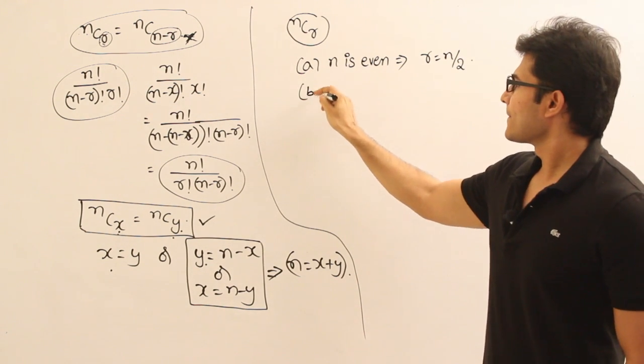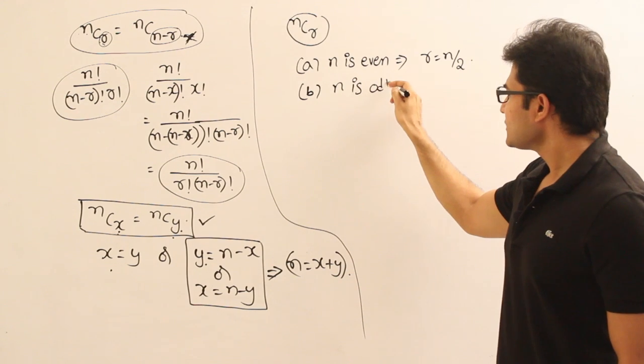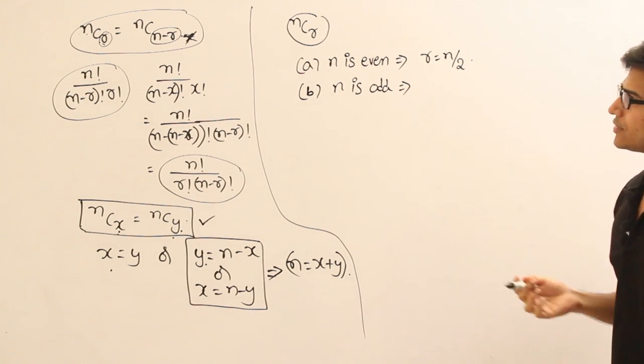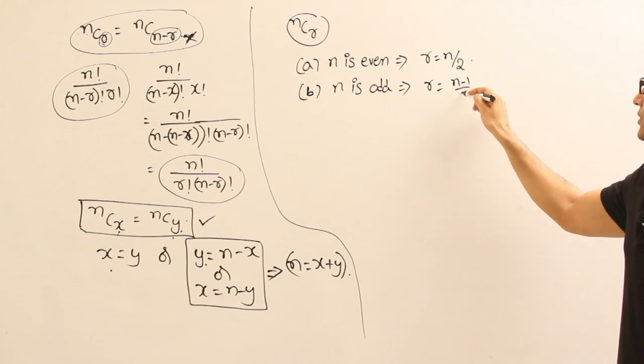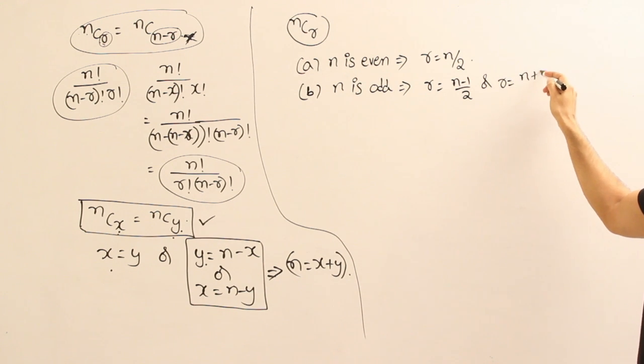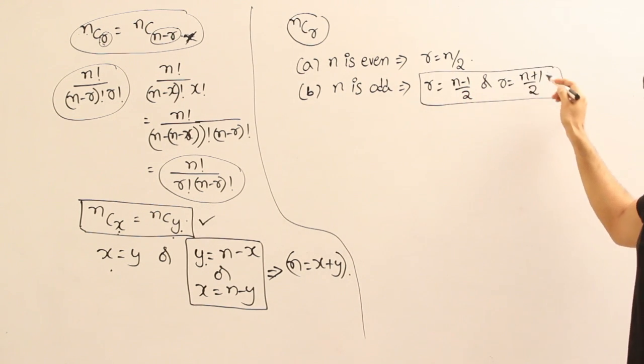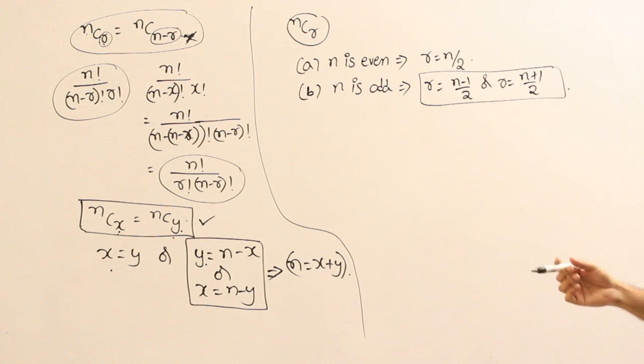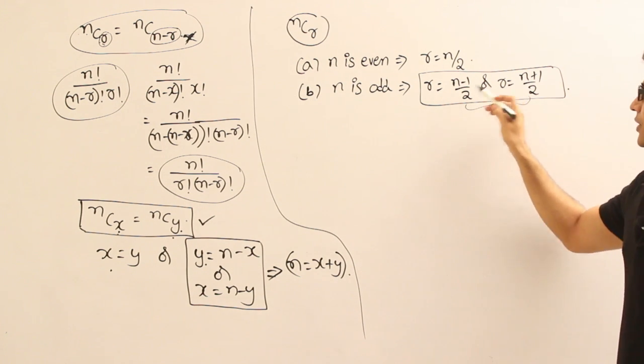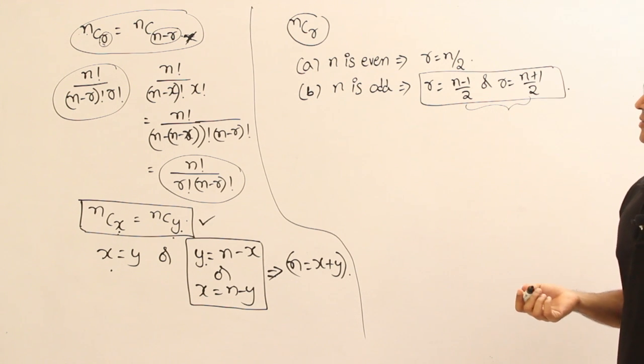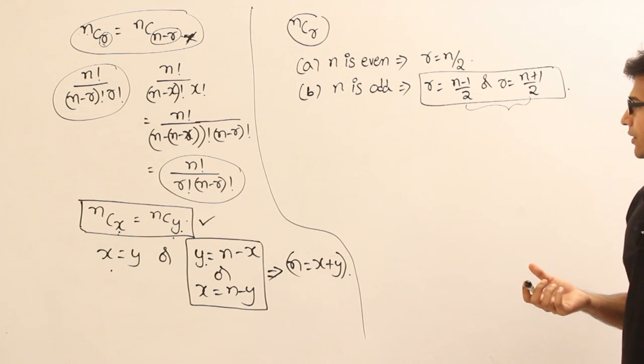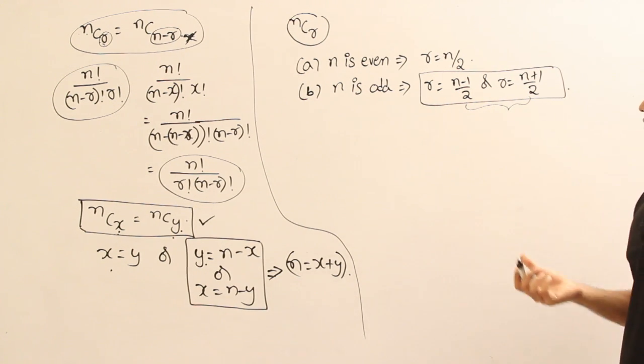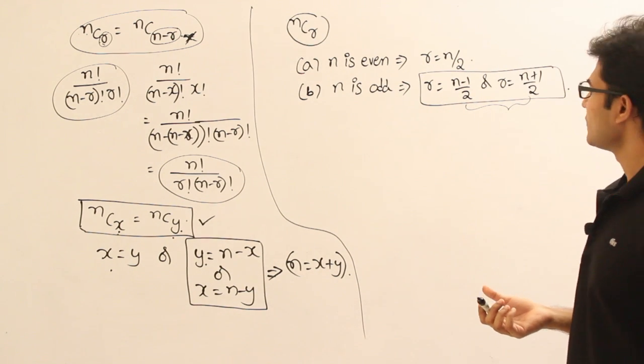Case B: N is odd. In case if N is odd, then the value of this NCR is going to be maximum when R is equal to (N-1)/2 or R is equal to (N+1)/2. In these two cases, these are the two values for which it is going to be maximum and moreover, it is equal also. So for these two cases, whenever R equal to (N-1)/2 or (N+1)/2, it is maximum. Along with that, it can also be proven that the values are equal.